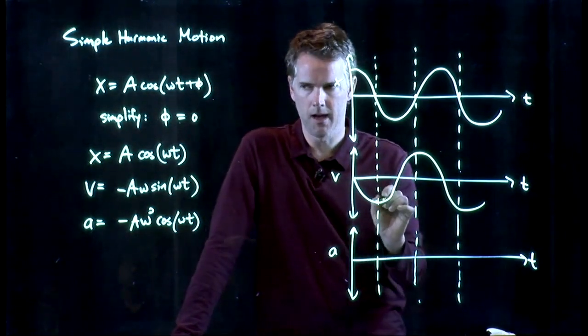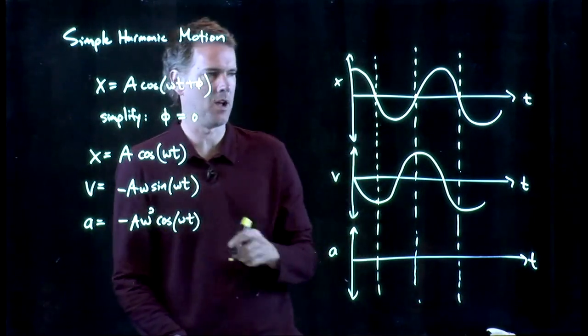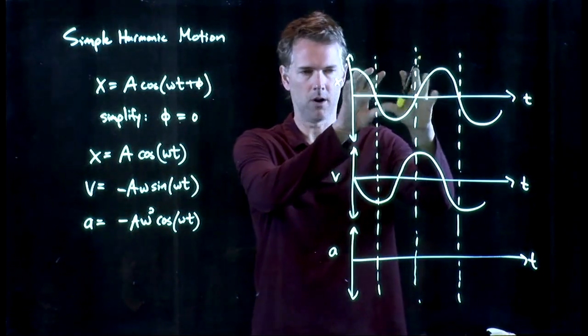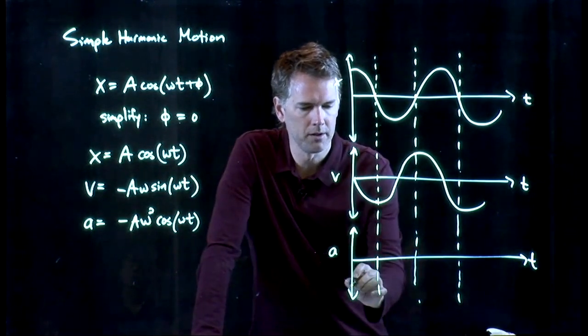What about the acceleration a? A is a cosine but there's a negative sign in front. That's pretty easy to draw because we have a cosine right here. So all I have to do is flip it over and so if I flip that over it's going to look like this.